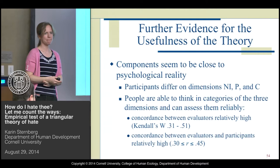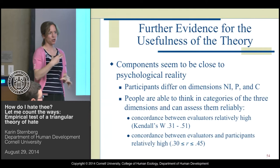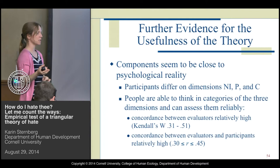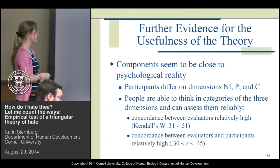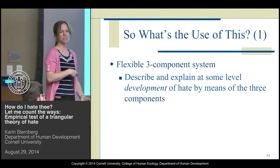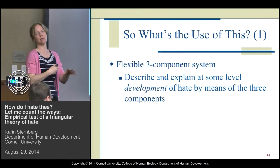In summary: the hate scale has good internal consistency reliability, the factor structure corresponded well to the hate components, and we found good construct validity. The data fit the theoretical model of hate, especially with item parceling. It was good to see that the components seem very close to psychological reality — people differed on dimensions of negation of intimacy, passion, and commitment, and were able to assess them reliably, as shown by satisfactory concordance between evaluators and between evaluator and participant data.